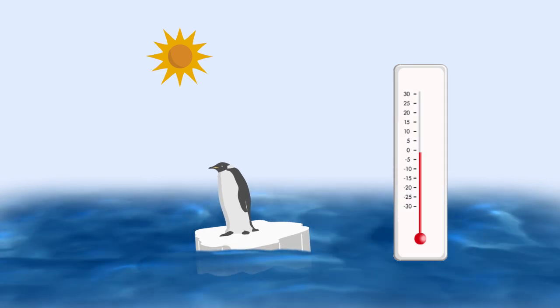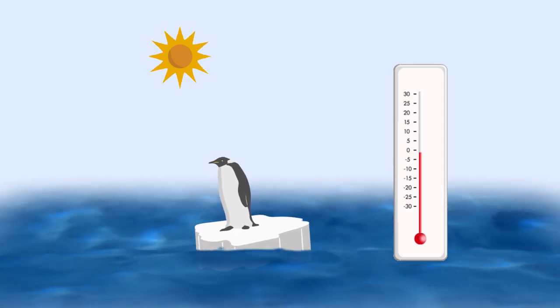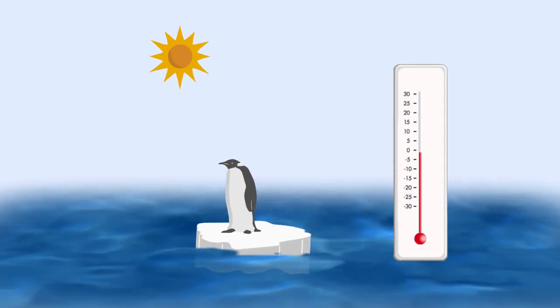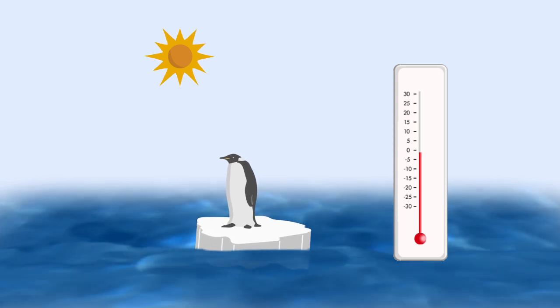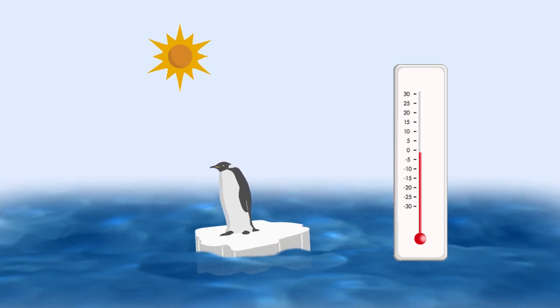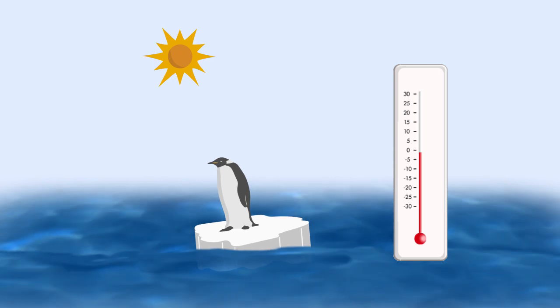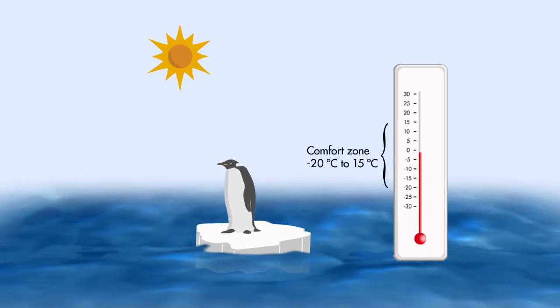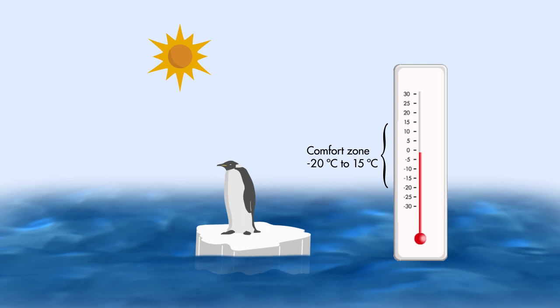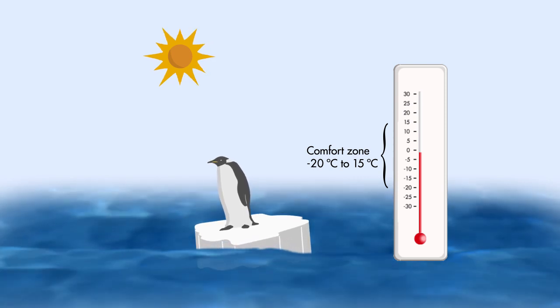Let's first define a comfortable temperature range for our friend. Anything higher than 15 degrees Celsius is too hot, while anything below negative 20 degrees is too cold. Now, we need to write code to check if the temperature value is within the defined range. So, how can we do this?